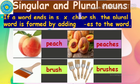If a word ends in S, X, CH, or SH, the plural word is formed by adding ES to the word. For example, peach. What are the last two letters of the word peach? CH. So if a word ends with CH, we should add ES in its plural form. So peach becomes peaches in its plural form.